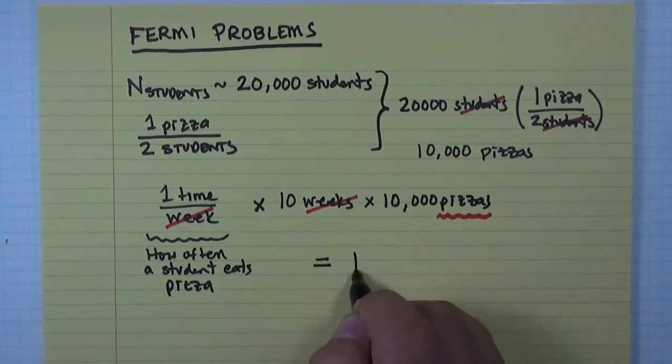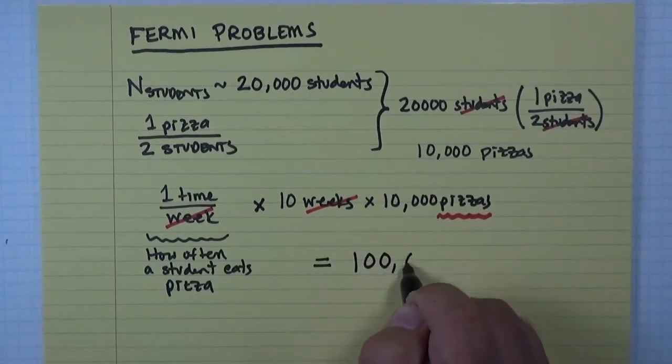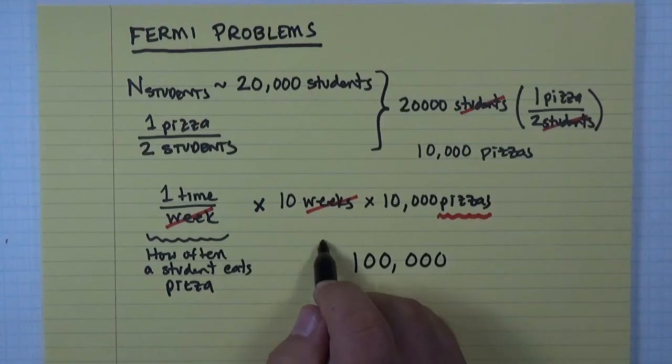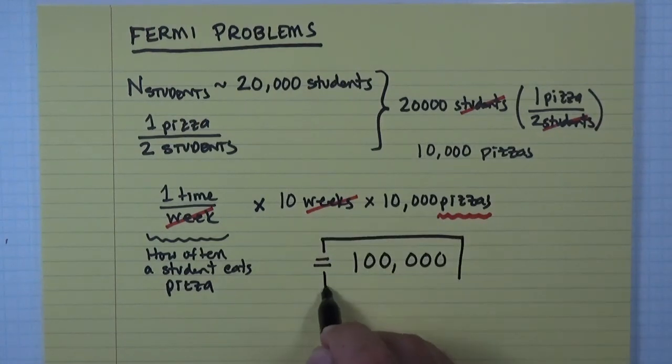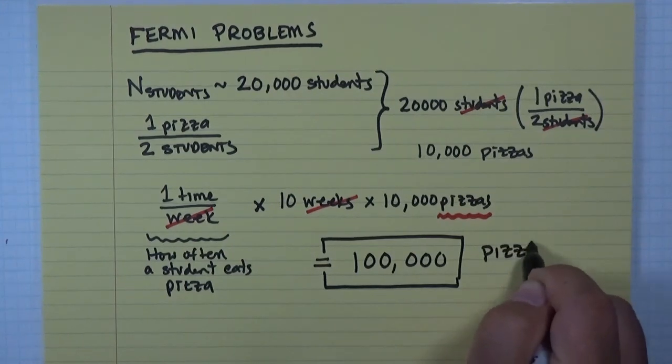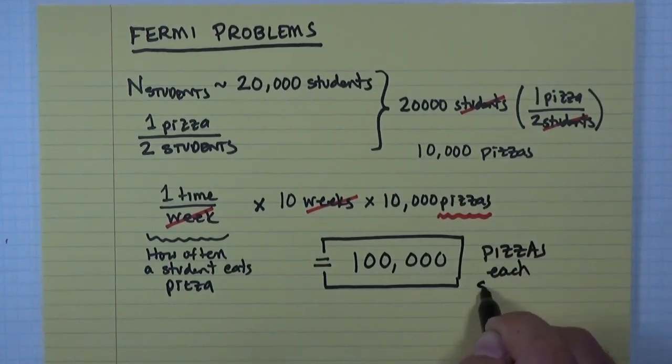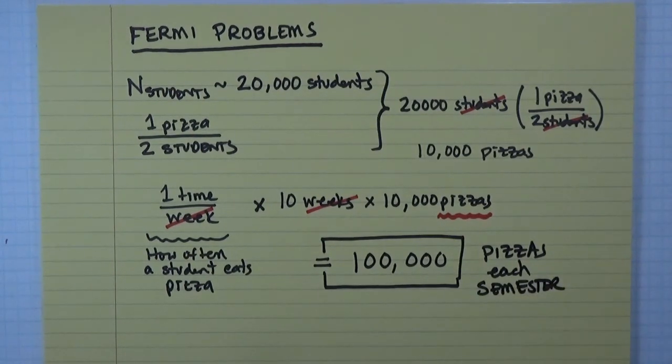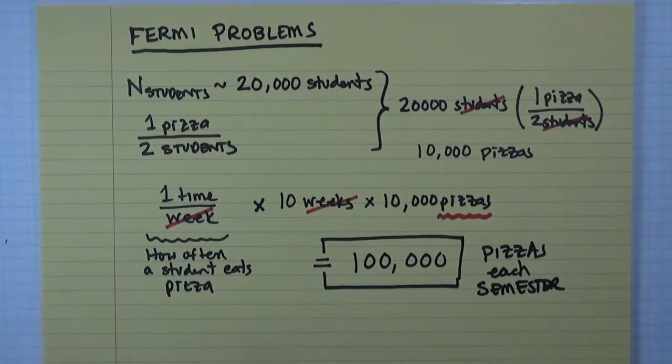And so we see that on campus we expect a hundred thousand pizzas to be consumed each semester. So you can imagine if you are a business person trying to imagine starting up a pizza joint next to a college campus, this might indeed be a very good investment. So that's an example of how to do Fermi problems.